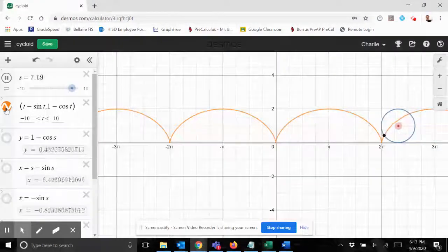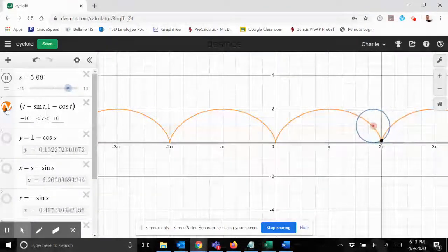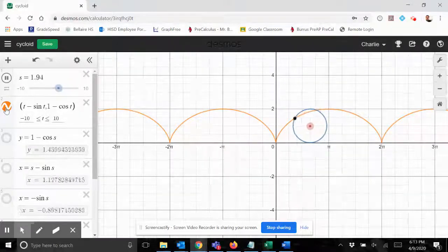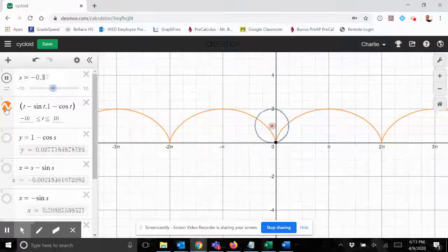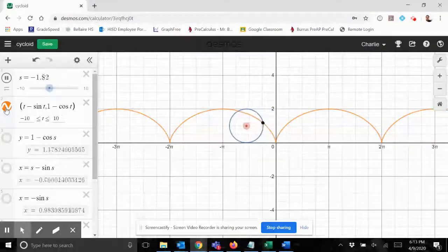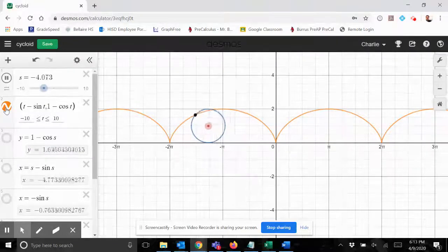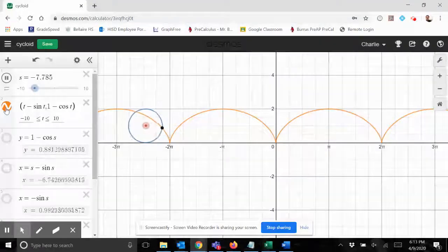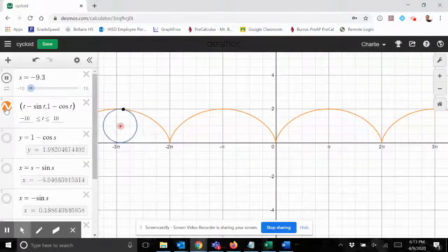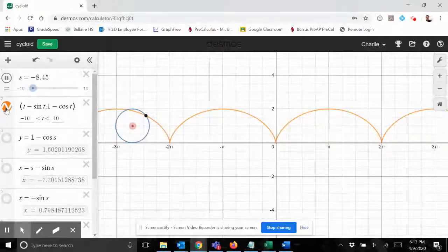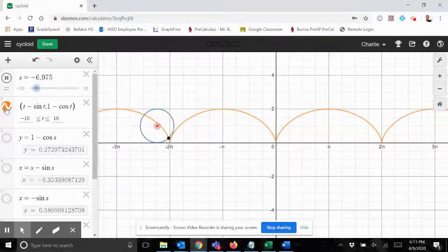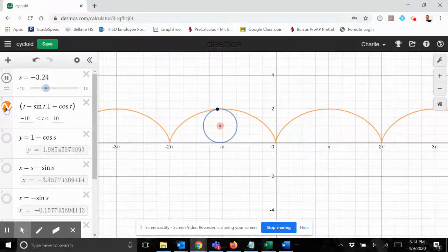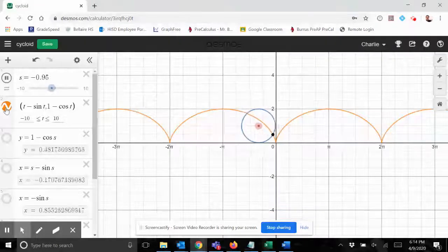As you see, as the point moves around the circle, it's tracing out this kind of orange colored path that is called a cycloid. Cycloids are very interesting if you're into that kind of thing, and I know I am. What I want to do today is come up with an equation for a cycloid. So my suggestion is, instead of trying to come up with an equation y equals some function of x, let's come up with parametric equations.